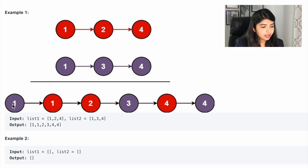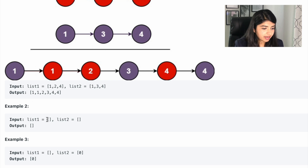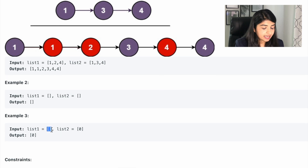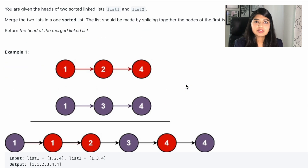For example, if list one is 1, 2, 4 and list two is 1, 3, 4, then we want to return 1, 1, 2, 3, 4, 4. If both lists are empty, we return an empty list. If one list is empty and the other has values, we return the pointer to the list which has the values.